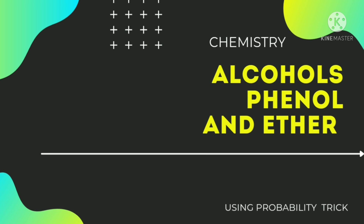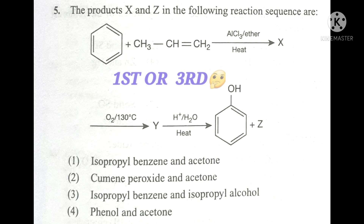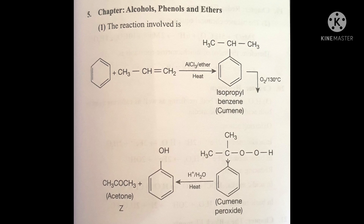In this question, option first and option third can be the answer because the probability of isopropyl benzene being similar from the start. To decide the correct answer, we take the help of other options. In the other options, acetone is being repeated more, so this helps find our answer. Therefore, the first option will be the correct answer. You can verify your answer here.